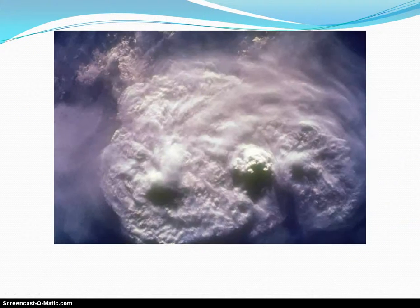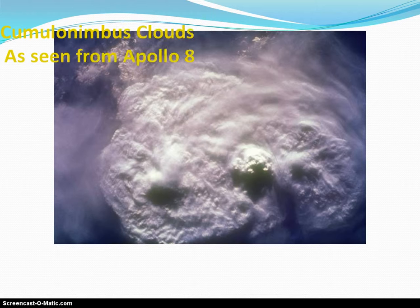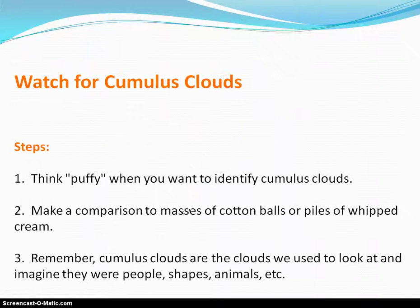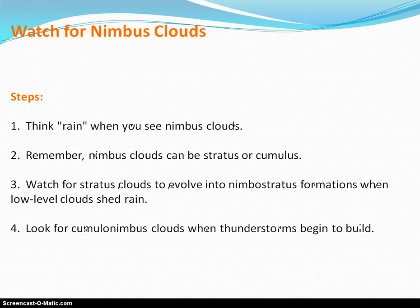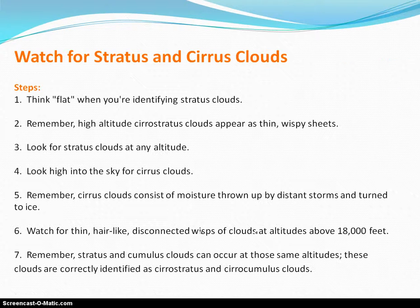That's pretty much it on types of clouds and how they form. Here's what to watch for when looking for cumulus clouds — that cottony ball look and similar things. Here's what to look for when identifying nimbus clouds, those rain clouds — cumulonimbus being a big one. And then what to watch for when looking for cirrus and stratus clouds. These are steps you can follow when identifying these types of clouds, and we're going to get a chance to go out and do this on a later date.